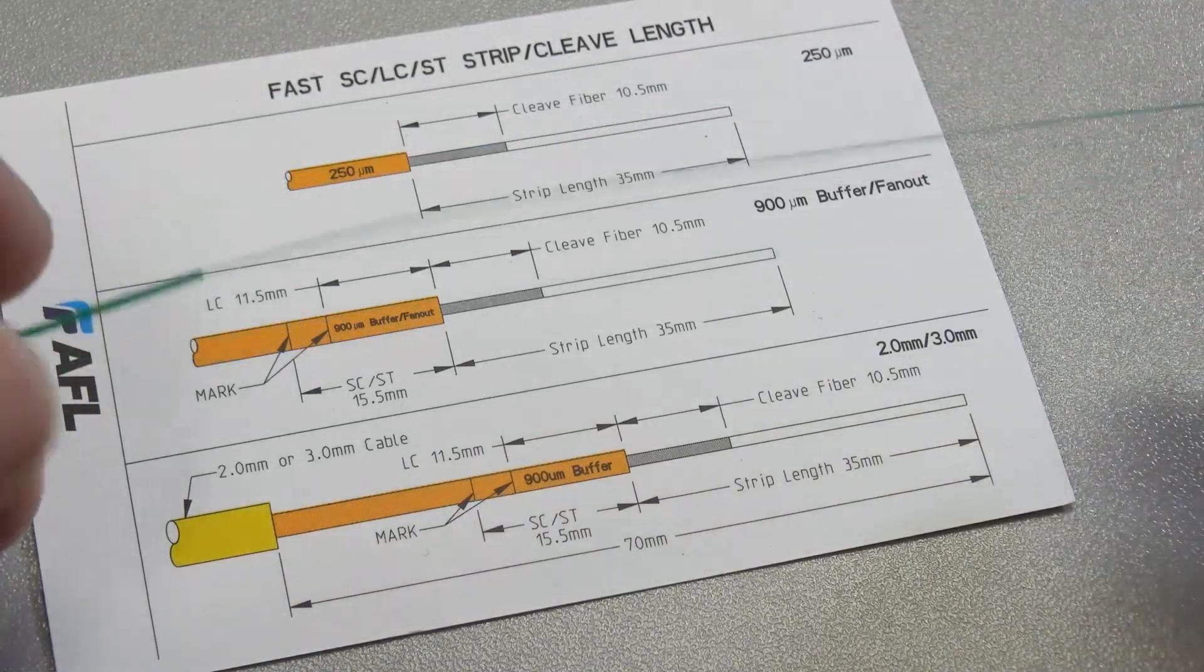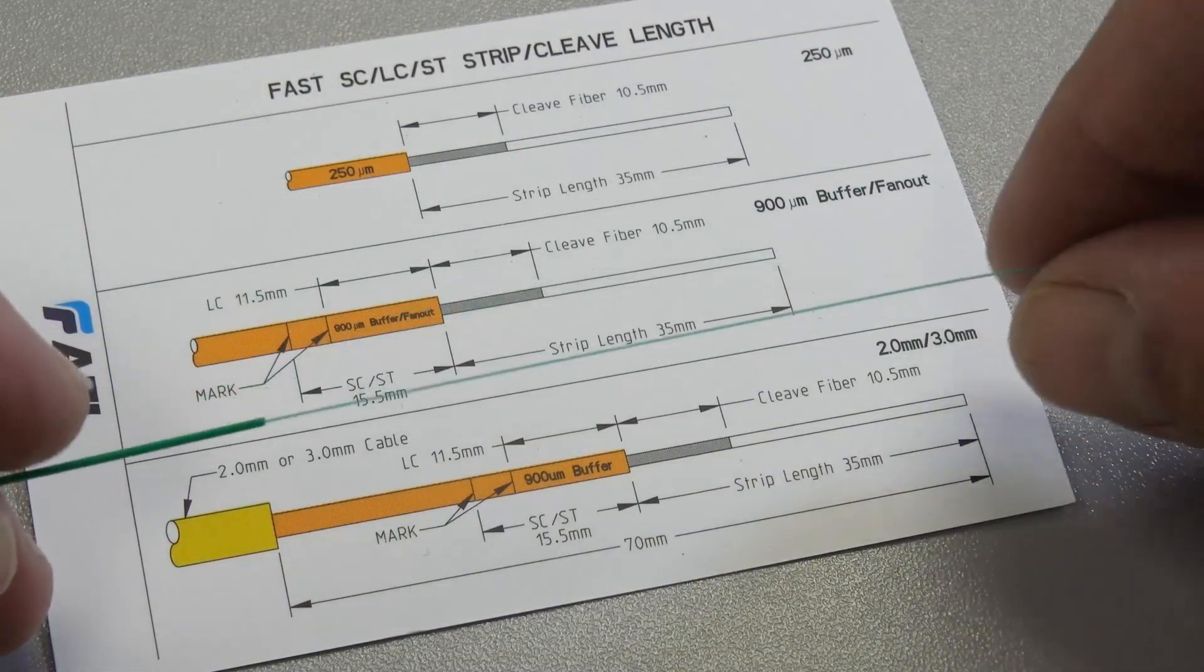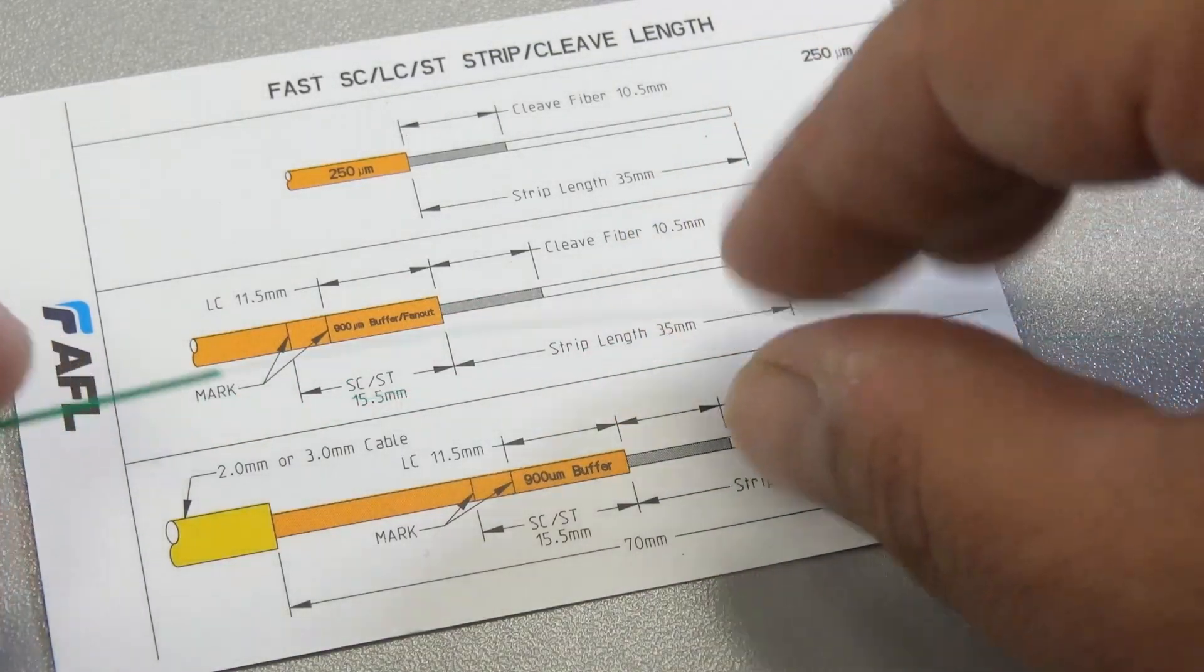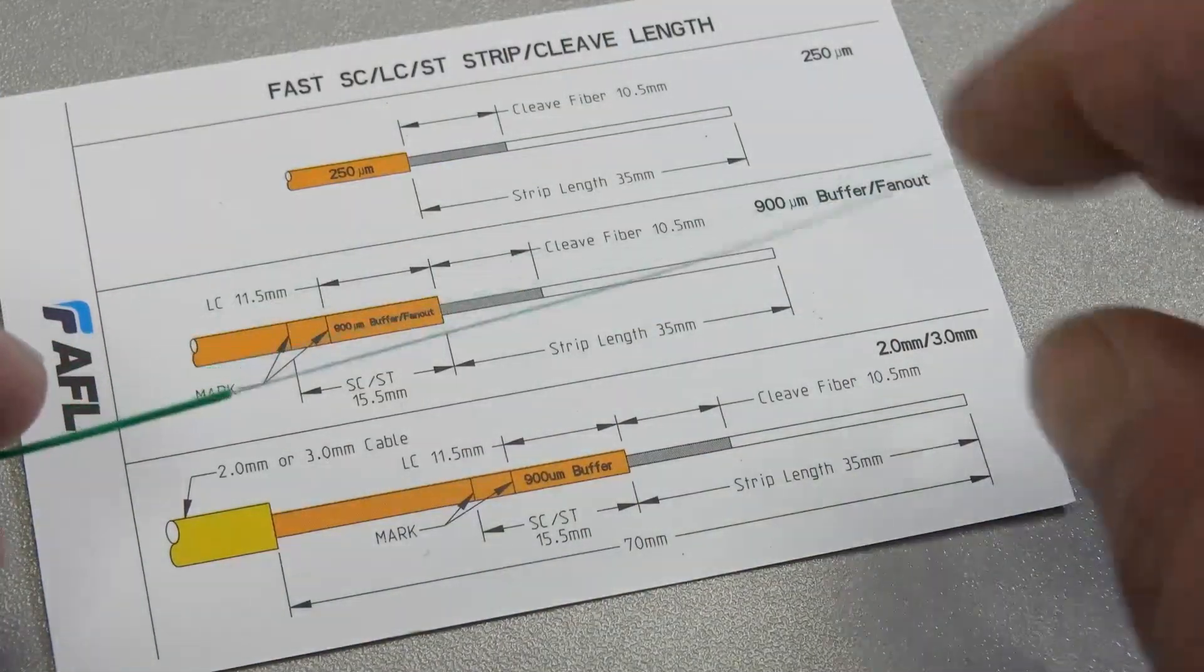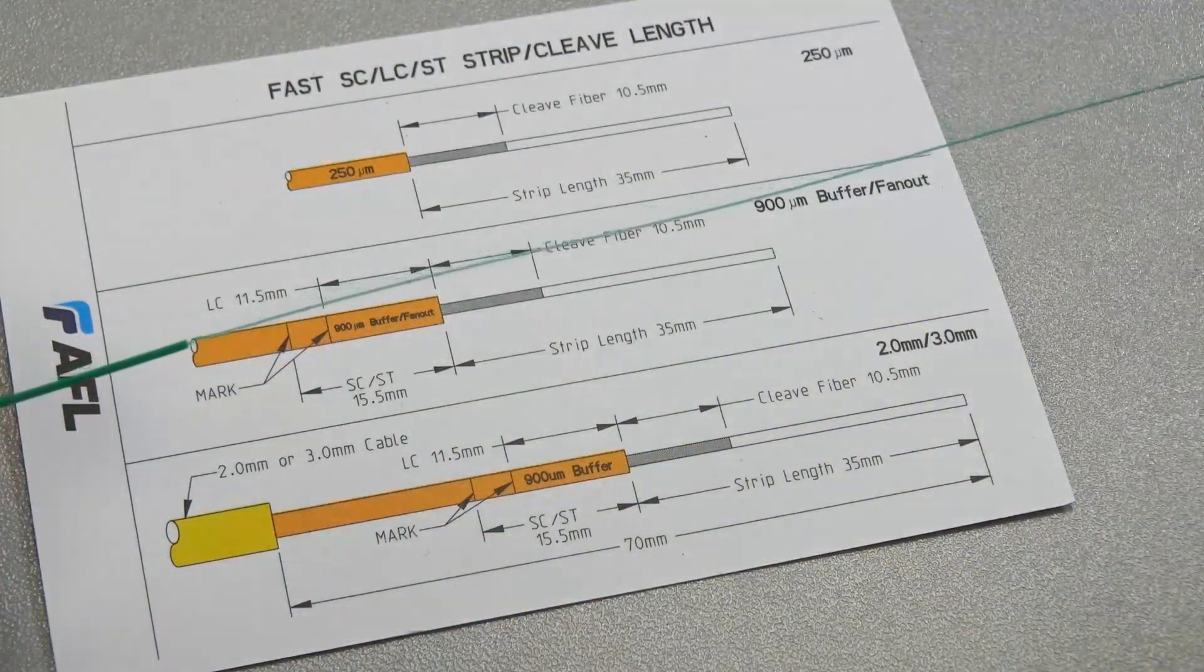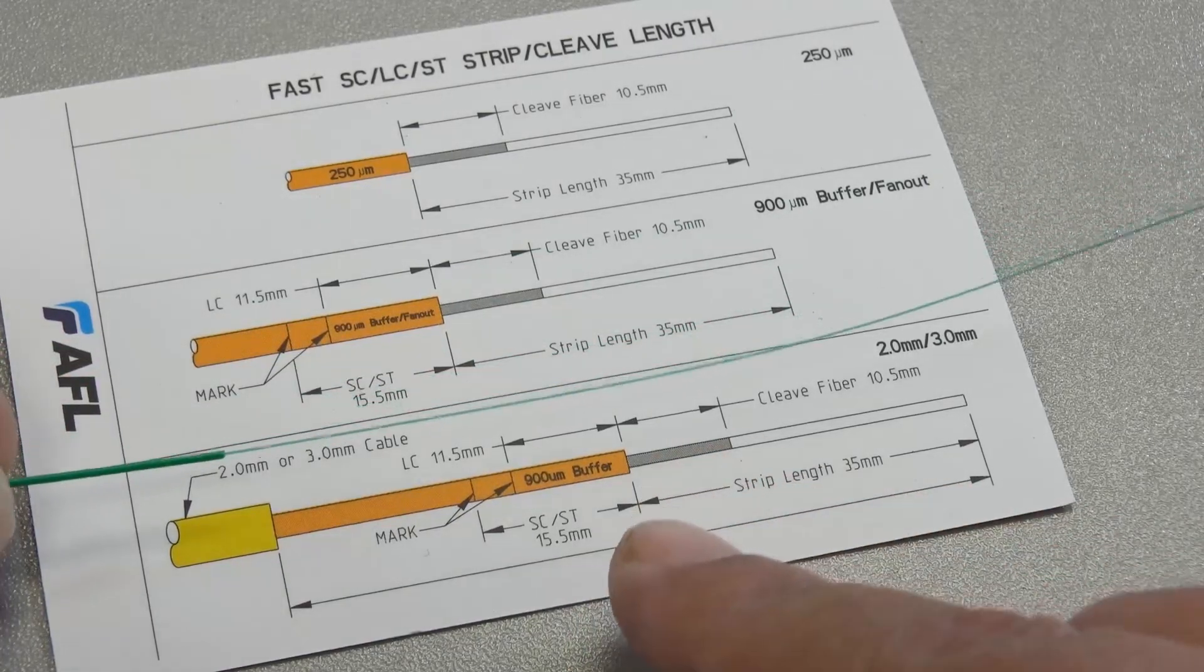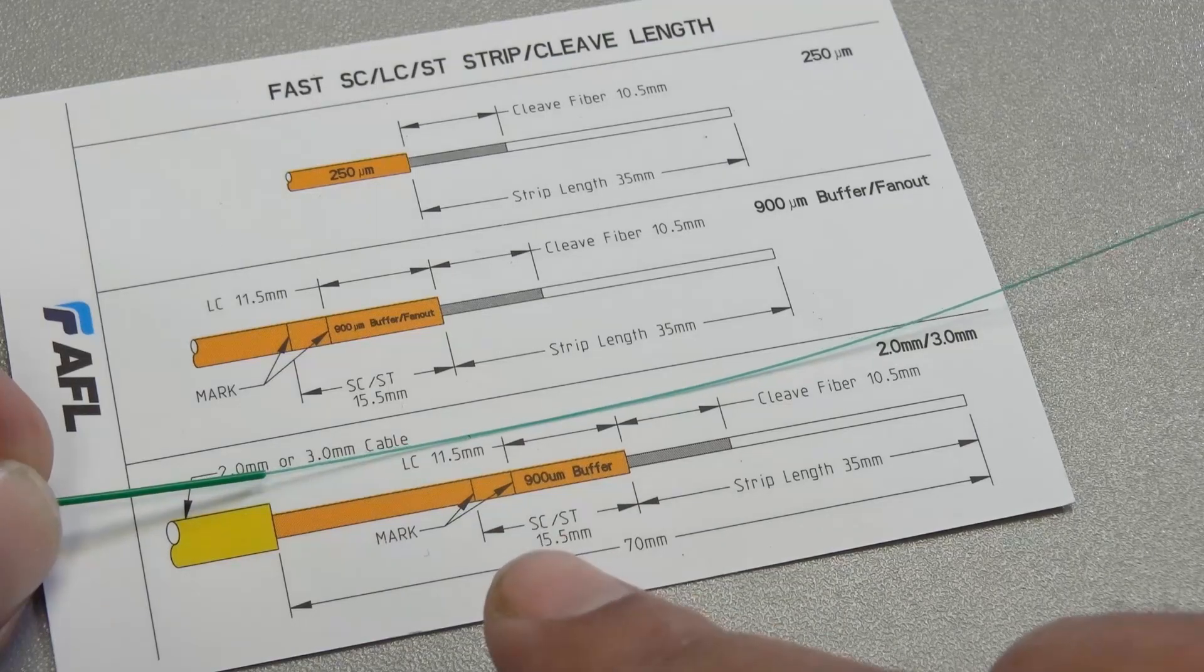After you get your 250 into your 900 tube, we need at least 35 millimeters. This length I got is way too long—I usually have a habit of that. If you have a little extra, it doesn't matter because we're going to trim it down to at least 35 millimeters. With the card included with the AFL kit, I'll probably cut it right there.